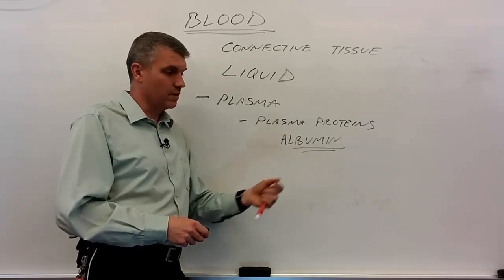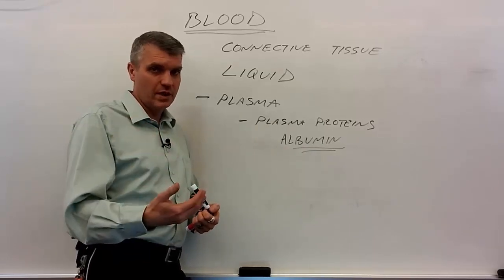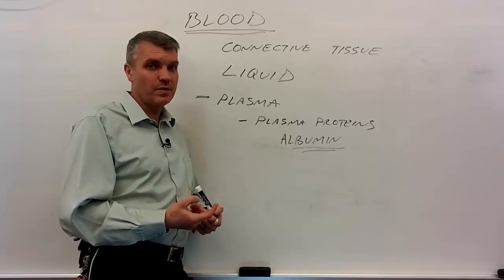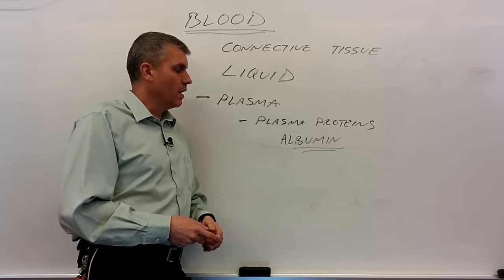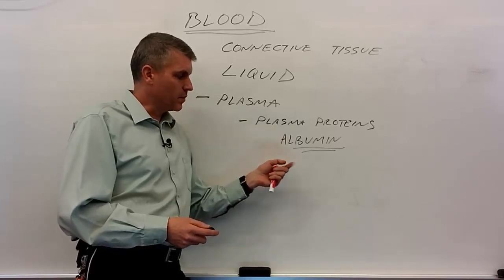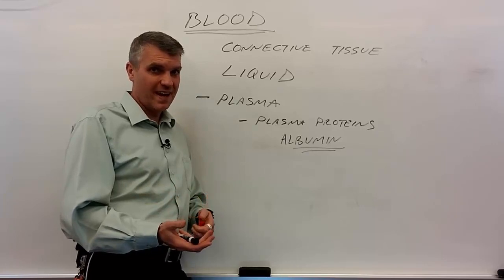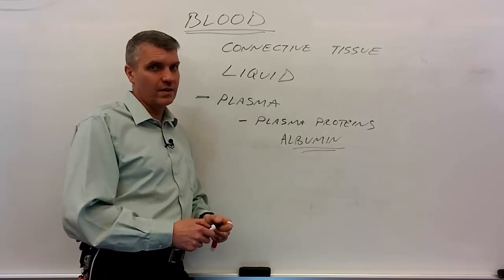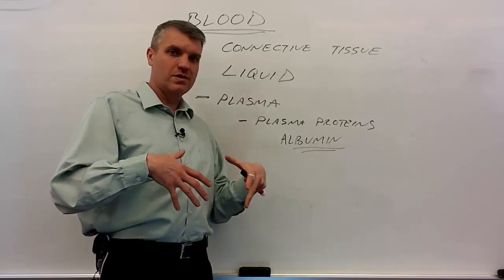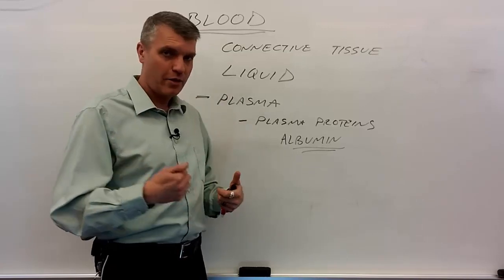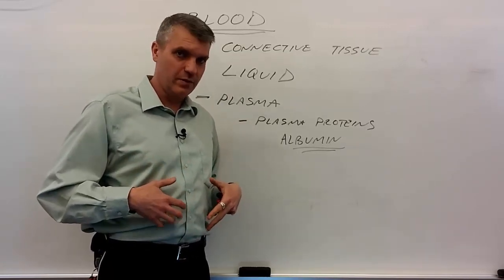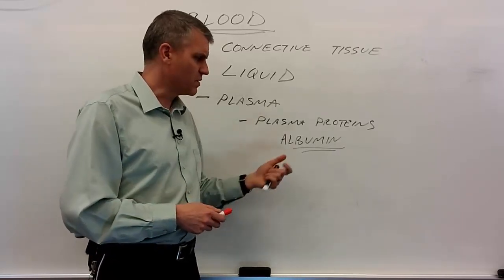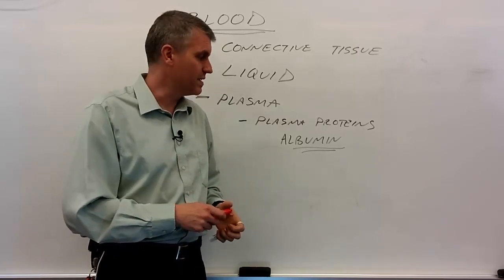If there's not enough albumin in the bloodstream, water can leave and accumulate in other tissues, especially in the abdomen — this is called ascites. A person with liver failure won't make enough albumin, so their belly will swell due to a third spacing of fluid moving from the bloodstream into the abdomen. You can also see this with protein deficiency in a person's diet.